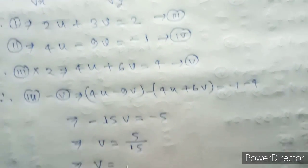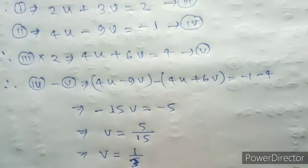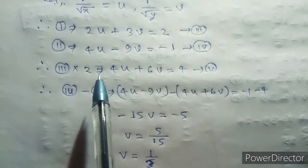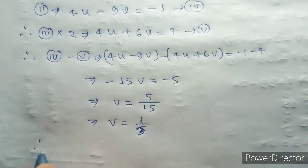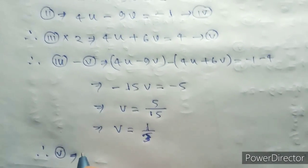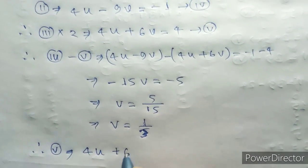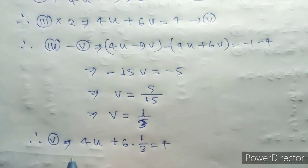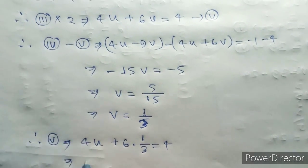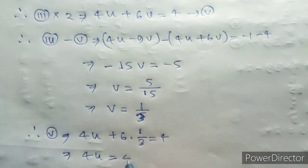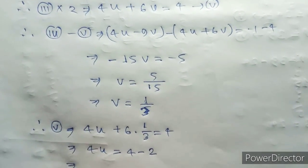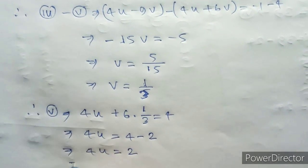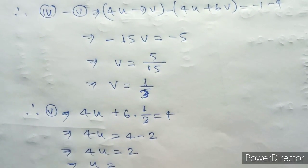From equation number 5, 4U plus 6 into V, where V is 1 by 3, equal to 4. This implies 4U equal to 4 minus 2, so 4U equal to 2. Therefore U equal to 2 by 4, so half.